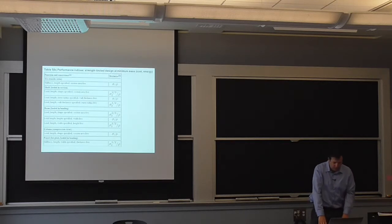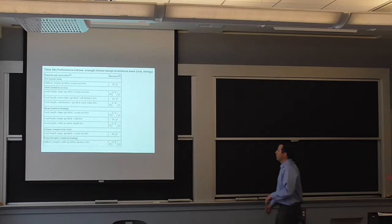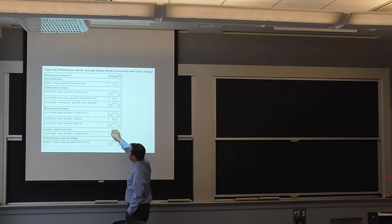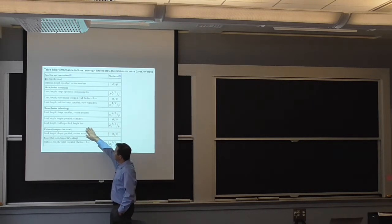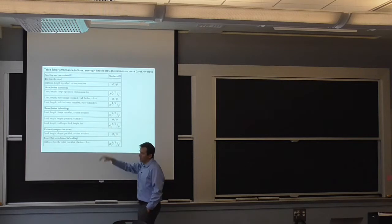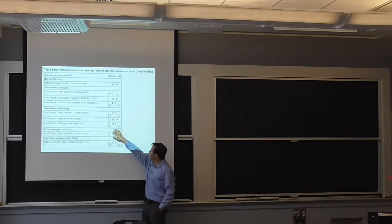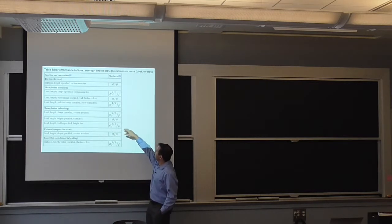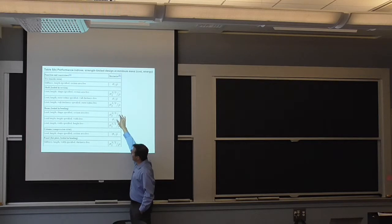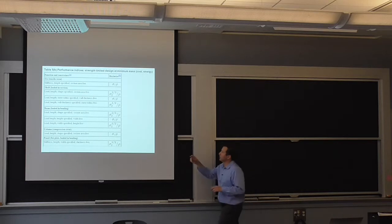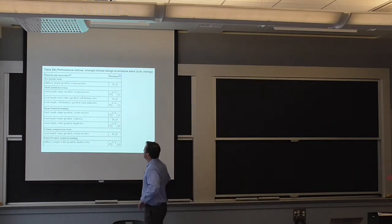There are charts put together for all the different conditions. This is the one for a beam, which essentially is a plate that you can change the height. And that was only the square root of the yield strength over the density as the performance criteria. But it will vary. So if you have a shape that you can vary the thickness, that's where you get your different exponent.